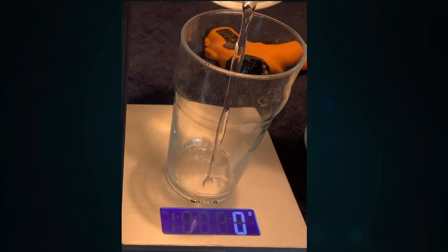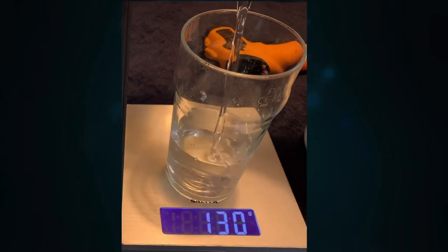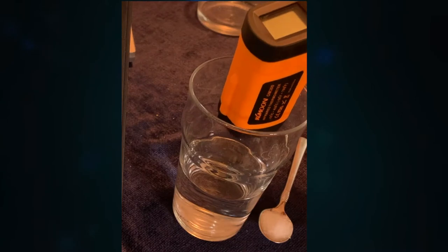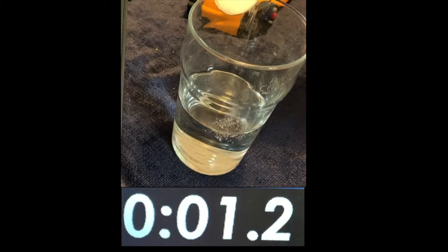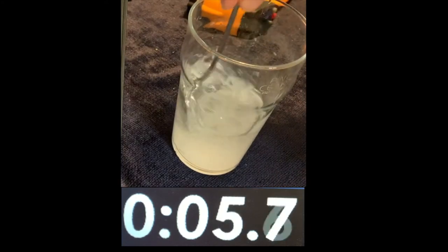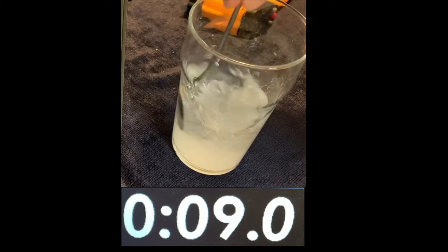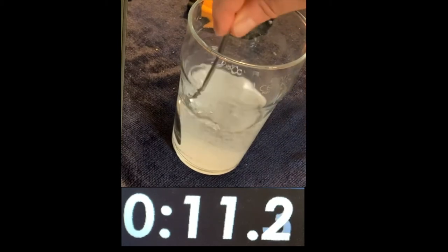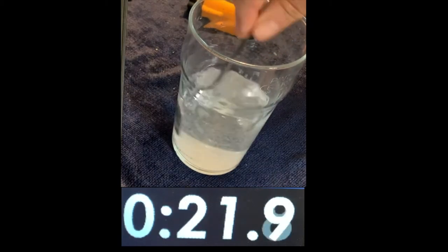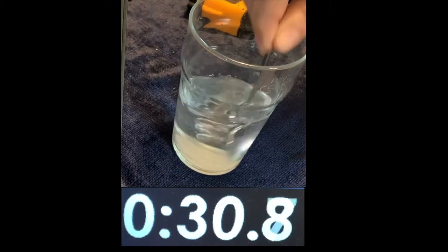After setting the balance to read zero with the empty glass on it, add 200 grams of the room temperature water. If you have a thermometer, measure and record water temperature. Start the timer the instant you add sugar to the water and keep stirring. Stirring speed affects the result, so we're stirring in time with a ticking sound of 100 beats per minute. The timer and ticker are at the end of this video for you to use.